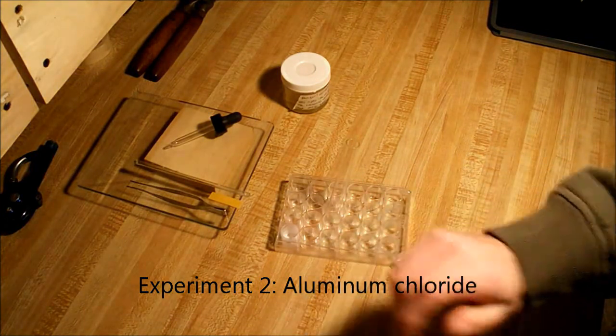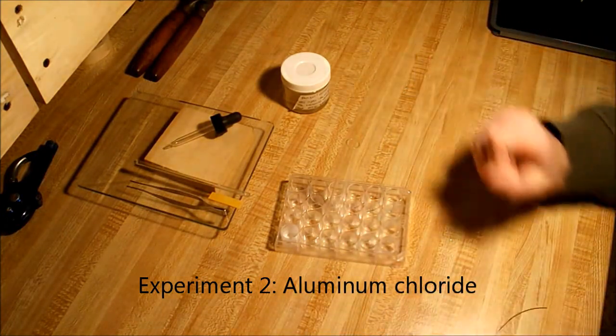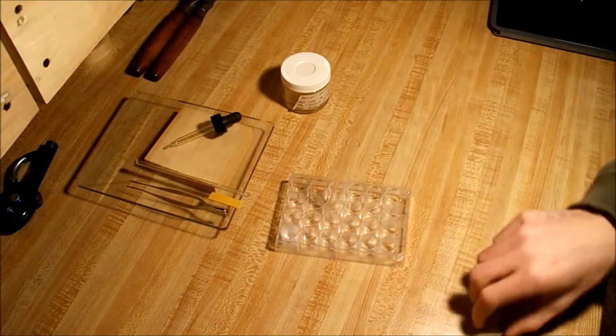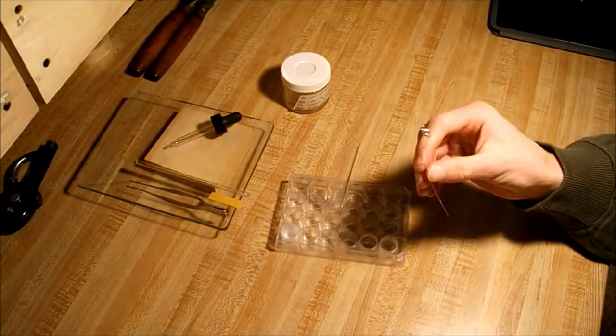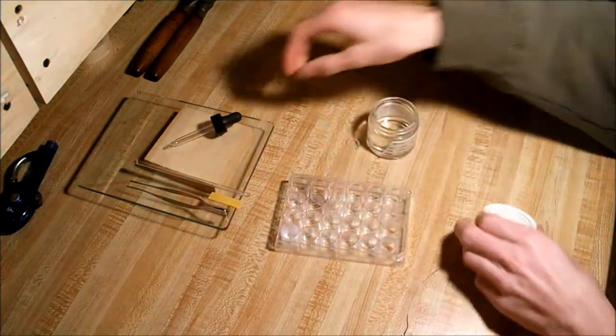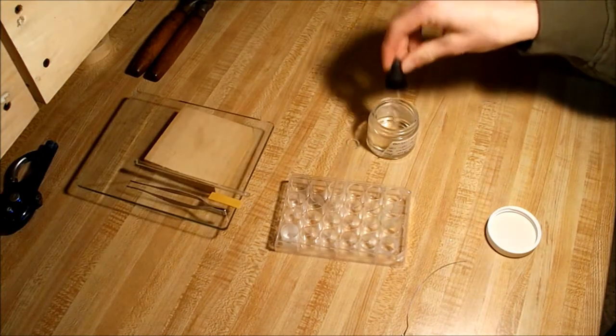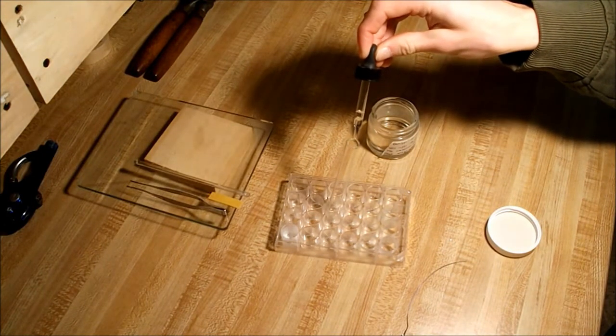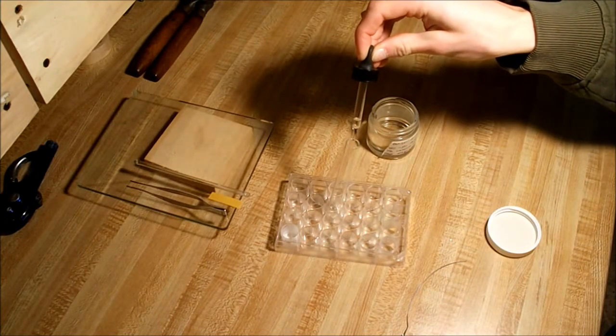Alright, as we're waiting for our iron chloride to finish forming, our next experiment is going to be making aluminum chloride using aluminum welding wire. Same as the last one, I always put 10 drops of hydrochloric acid into the test tube.